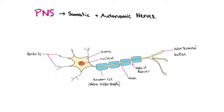Your peripheral nervous system consists of your somatic and autonomic nerves — the nerves that extend from the brain and spinal cord to all your muscles and glands. Now we'll take a look at the structure of a neuron. A typical motor neuron has almost a star-like appearance at one end, then a long projection, and then wrappings around that long projection.